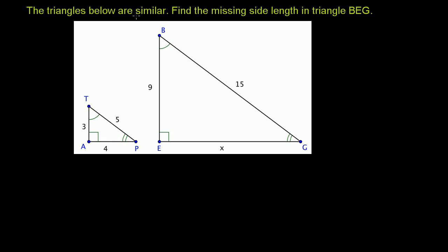The triangles below are similar. Find the missing side length in triangle BEG. So the missing length is right here. We're calling it length x.